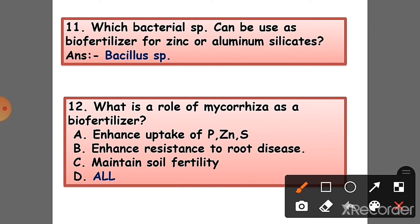Question 11: Which bacterial species can be used as a biofertilizer for zinc and aluminum silicates? Answer: Bacillus species.